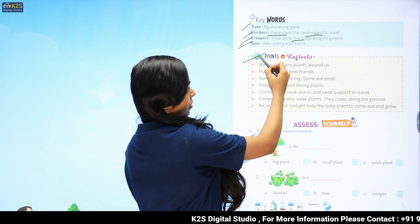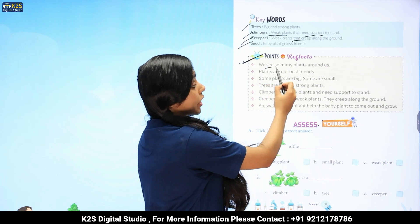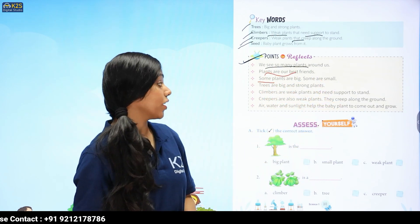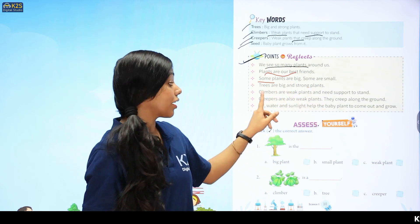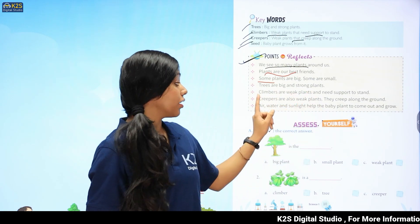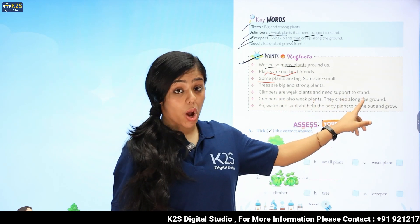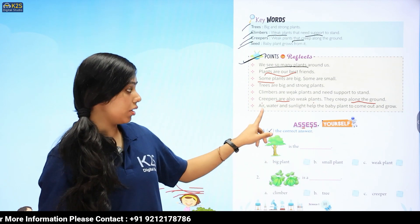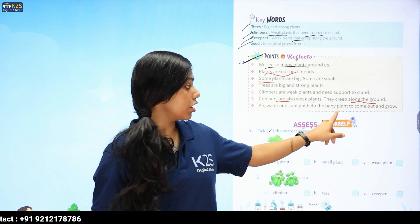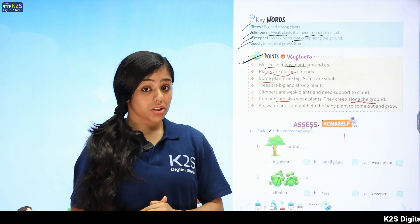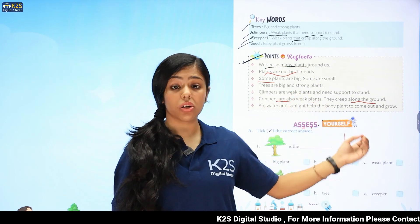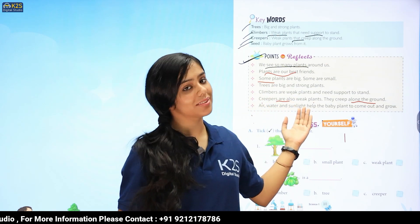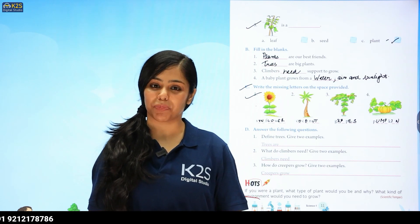Now, here we have points to reflect. We see so many plants around us. Plants are our best friends. Some plants are big and some are small. Trees are big and strong plants. Climbers are weak and need support to stand. Creepers are also weak. They creep along the ground. Air, water and sunlight help the baby plant to come out and grow. So, that's it for today. We will see in the next video. Keep learning and keep watching. Thank you for listening. Thank you.